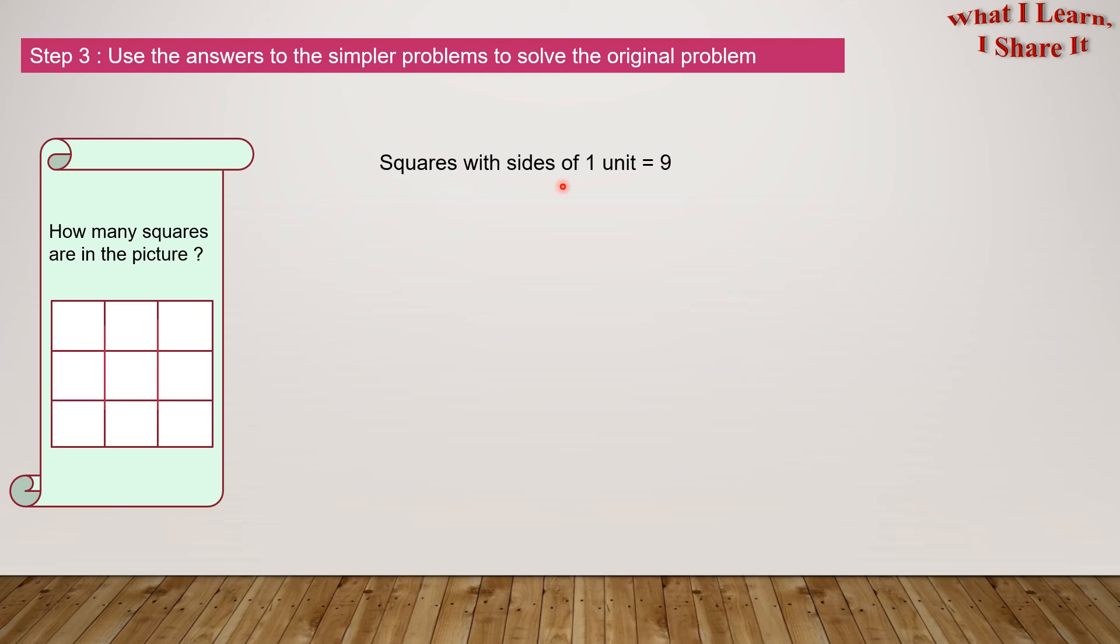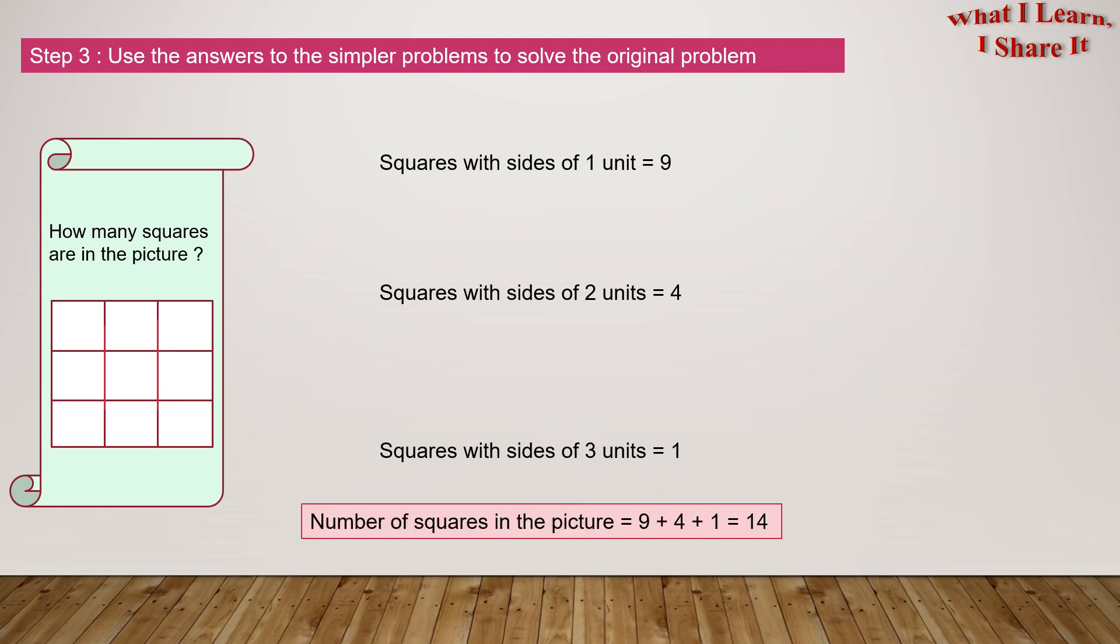Squares with the size of 1 unit equals 9. Squares with the size of 2 units equals 4. Squares with the size of 3 units equals 1. Number of squares in the picture equals 9 plus 4 plus 1 equals 14.